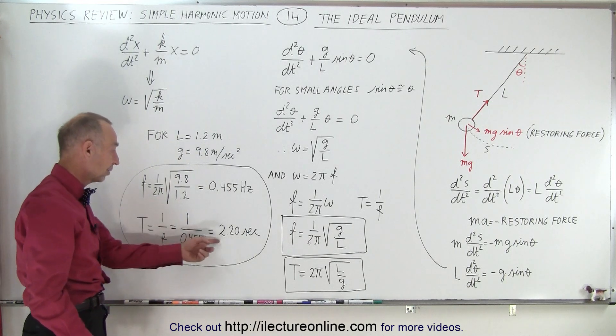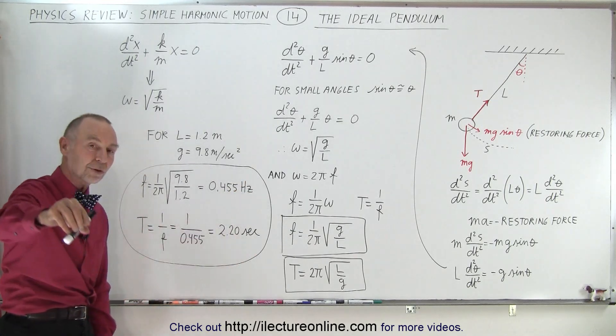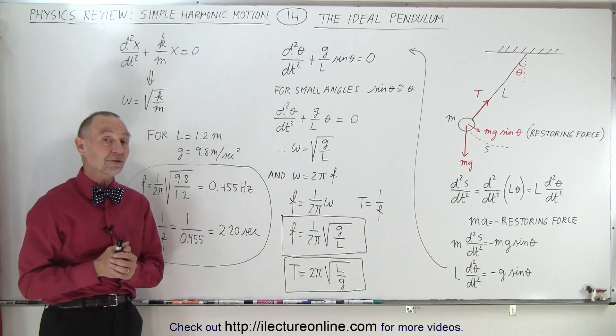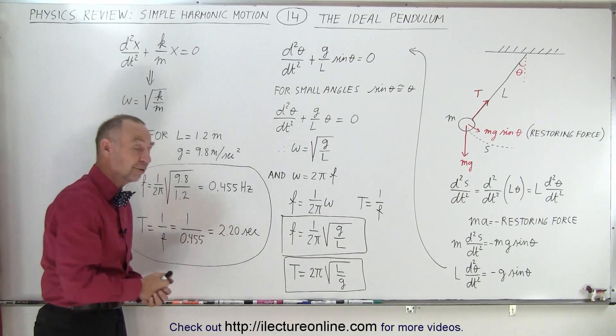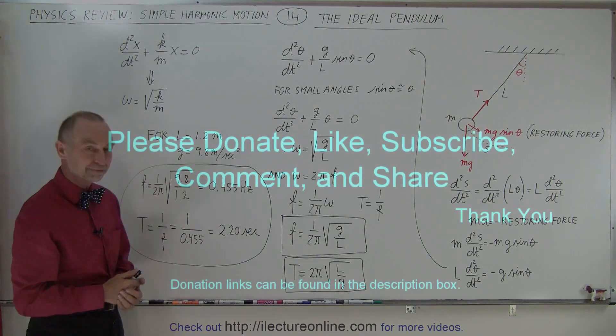That means that the period, which is the inverse of the frequency, would be about 2.2 seconds. So 2.2 seconds to go in one direction and come back to its original position. And that is what we mean by an ideal pendulum and how to derive the equations for the frequency and the period of oscillation. Thank you.